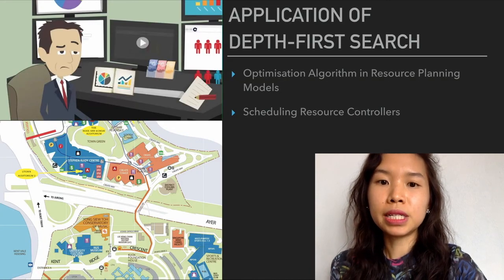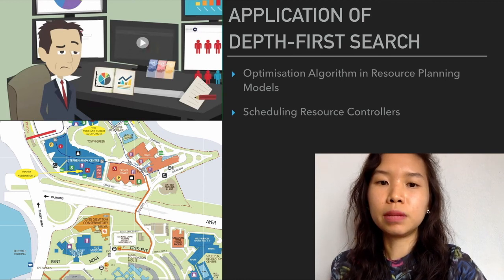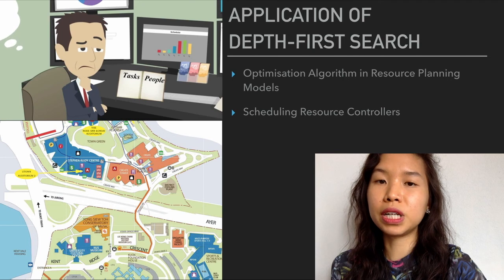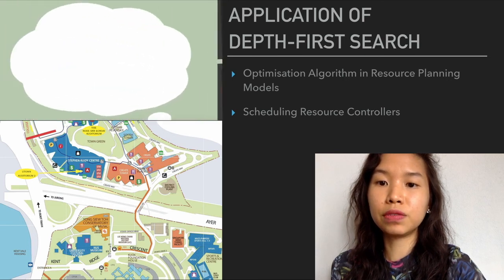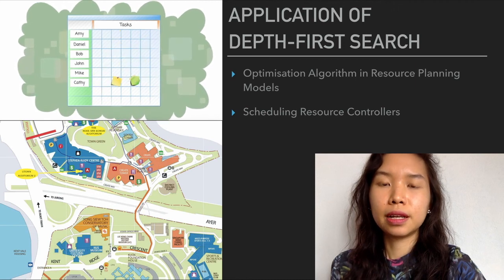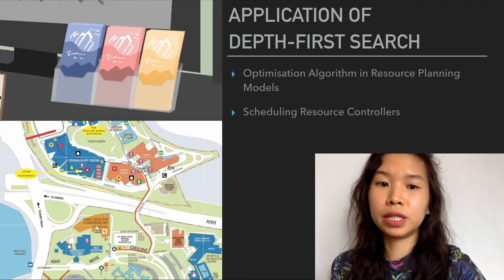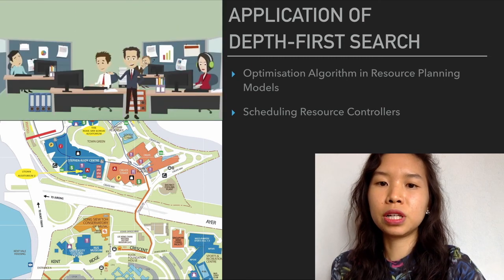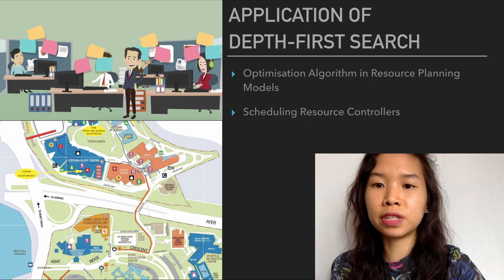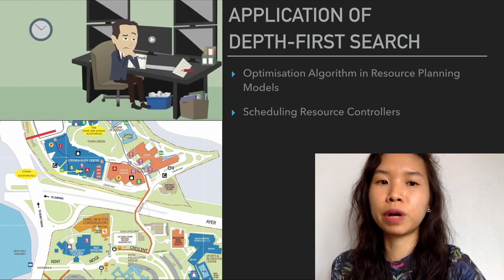An example of an enterprise solution to which backtracking depth-first search can be applied is resource management. Backtracking can be used in problems of an interconnected network for which there are limited resources and there is a need to find optimal solutions satisfying all operating constraints. This can be applied in business problems such as energy resource planning for city grids, office resource allocation, and optimizing supply and demand problems through a topological sort of priorities.